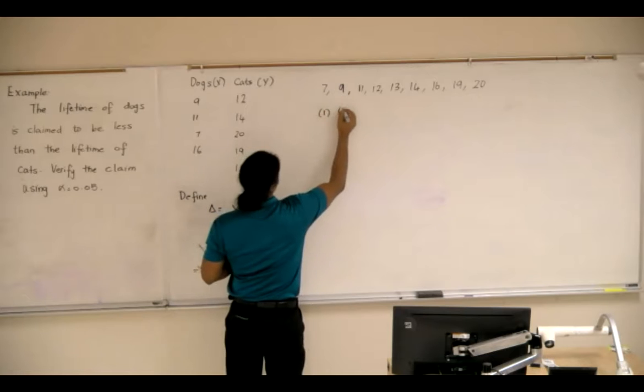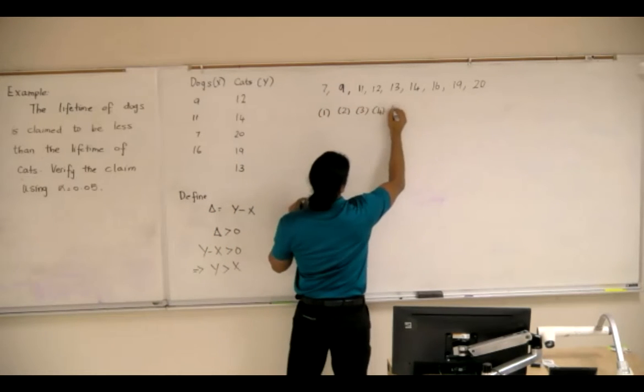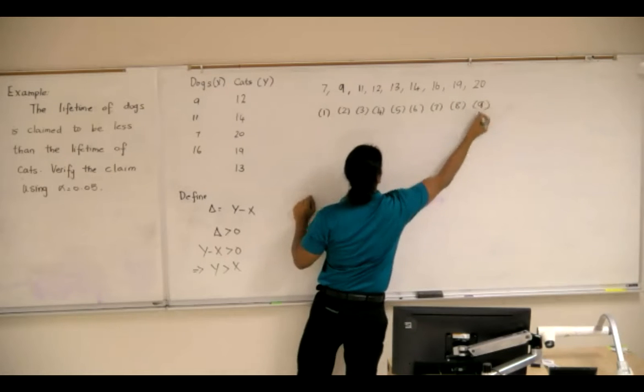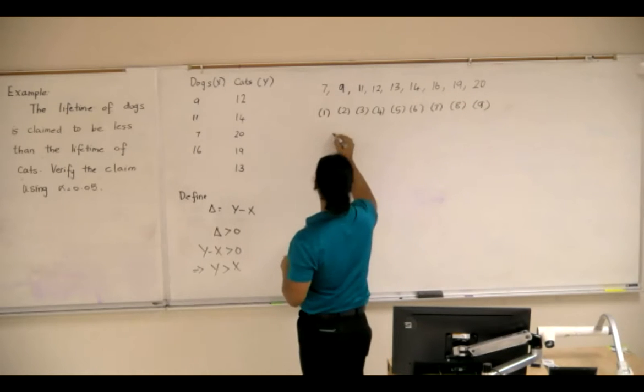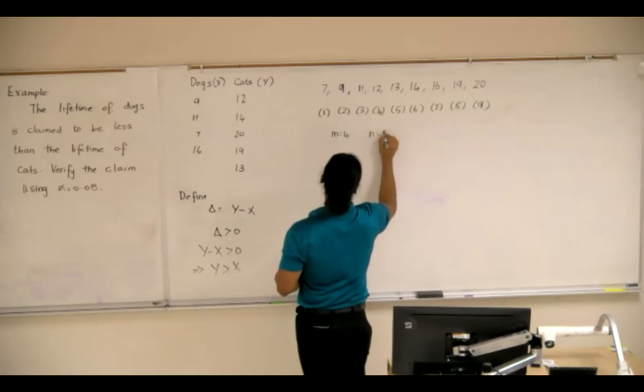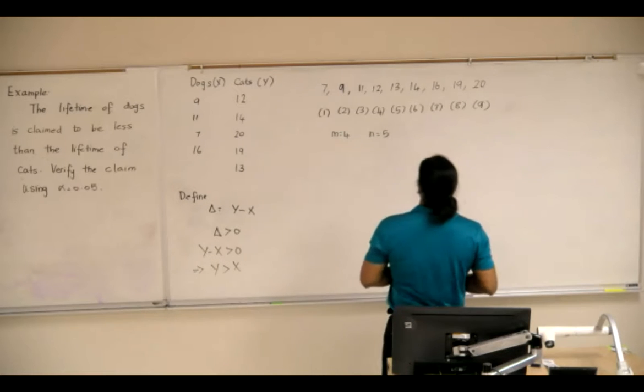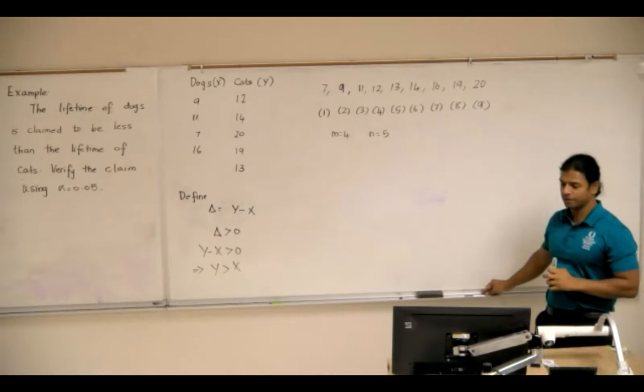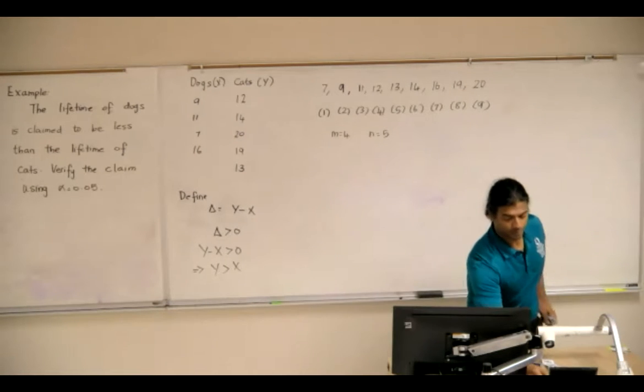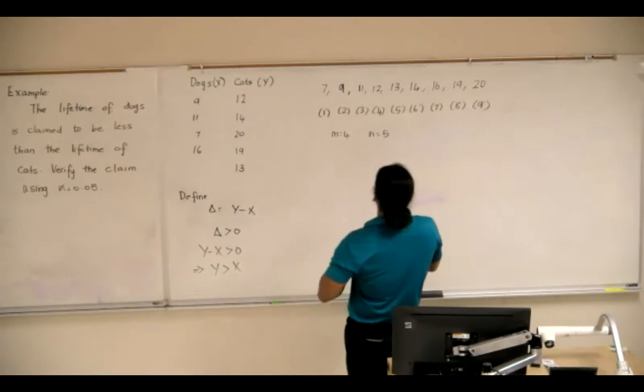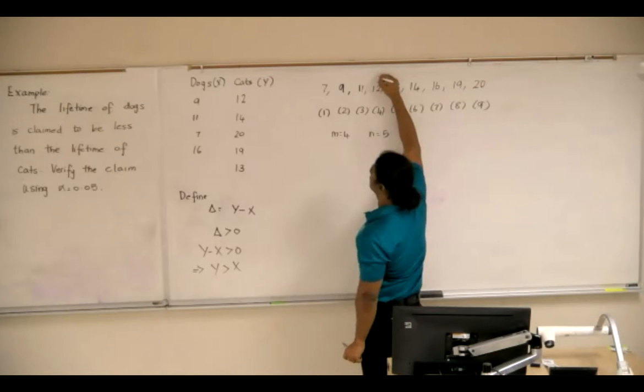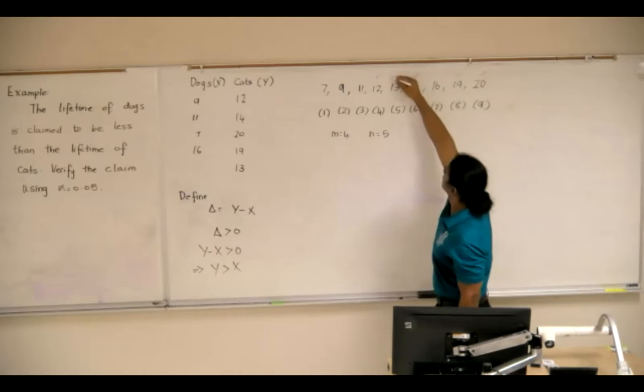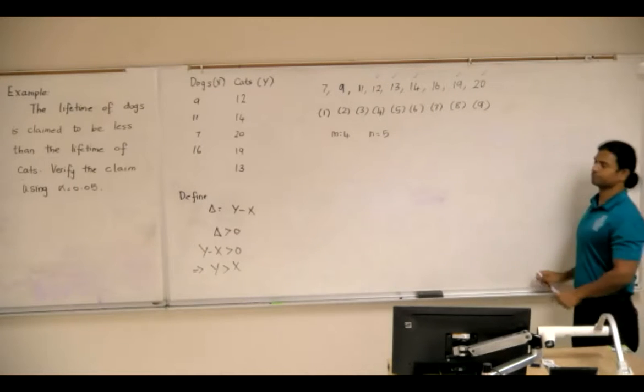1, 2, 3, 4, 5, 6, 7, 8, 9. And it's 4, and it's 5. We've got to pick the observations corresponding to y, which would be 12, 14, 20, 19, and 20.